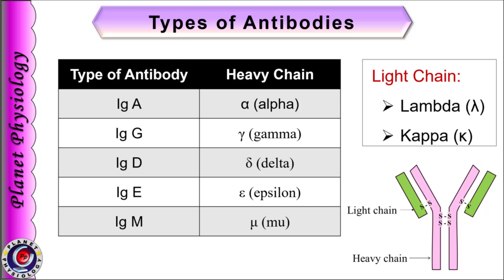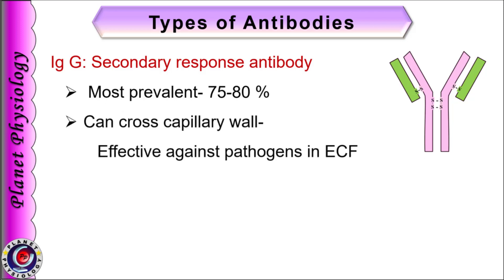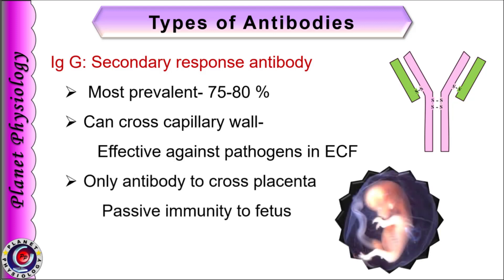IgG is a monomer made up of a single immunoglobulin unit, 2 heavy chains and 2 light chains. IgG antibodies are mainly secreted during secondary response and hence are known as secondary response antibody. It is the most prevalent form of antibody and contributes almost 80% of total circulating antibodies. IgG antibodies can cross capillary walls and hence are effective against pathogens in the extracellular fluid. It is the only antibody that can cross the placenta and hence offers passive immunity to the fetus. Rh blood group antibodies also belong to the IgG category and hence can cross the placenta to destroy fetal Rh positive cells in case of erythroblastosis fetalis.